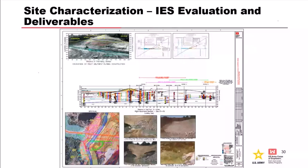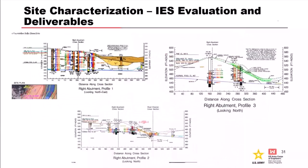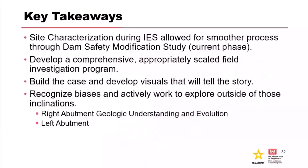The site characterization during the IES allowed for a smoother process through the dam safety modification study. We really classified the site, went through every node regarding the data, and tried to hone down exactly where the failure modes would occur and how we could reduce uncertainty. What we found was that the left abutment was really driving the risk through the continuous fine sands in those terrace deposits. The solution in the DSMS is putting a filter trench in the left abutment to cut off those fine sands and a seepage berm to collect seepage so there would be no unfiltered exit.